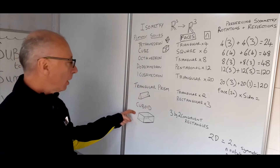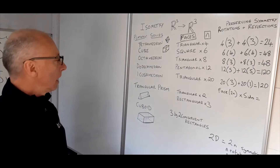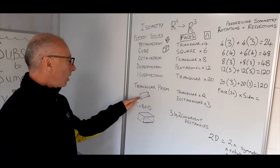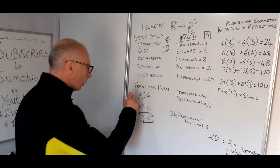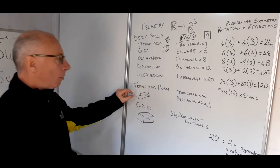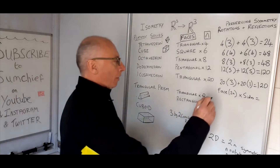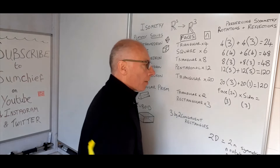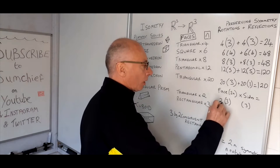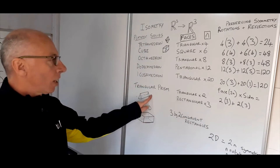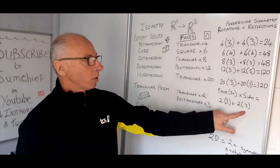Now for the irregular shapes — the triangular prism has two triangular faces and three rectangular faces. Taking the triangular faces: we point an axis through the center and get three rotations and three reflections. There are two triangular faces, so multiply each by two: two threes are six, plus another six — that's 12 preserving symmetries.